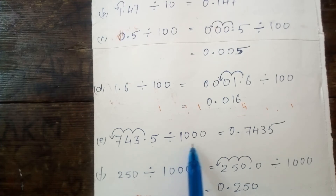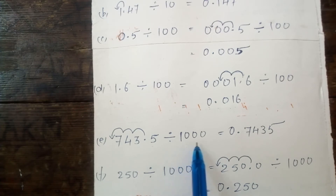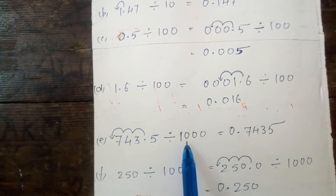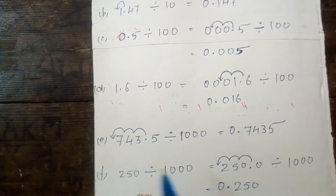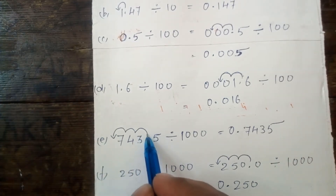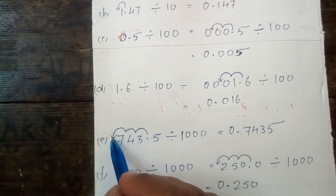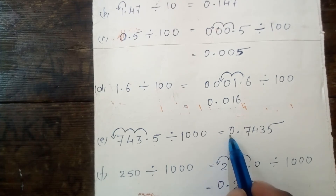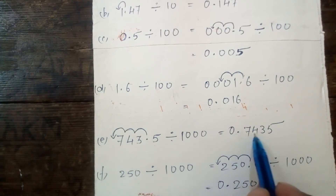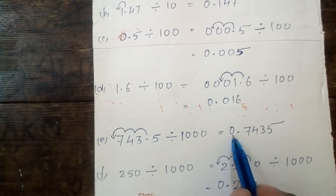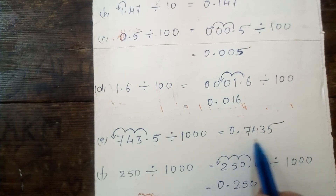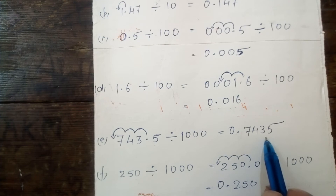In 1000, the number of zeros is 3, so we move the decimal point three places to the left. This is the first place, second place, and third place. Your answer will be 0.7435. 0.7435 is your required answer.